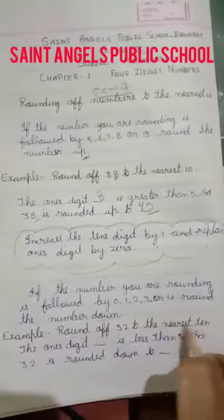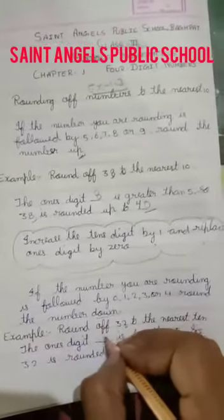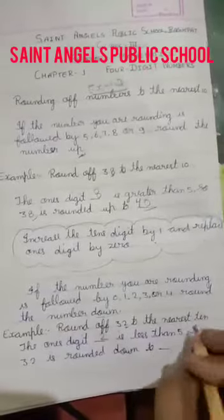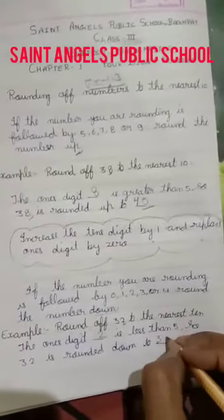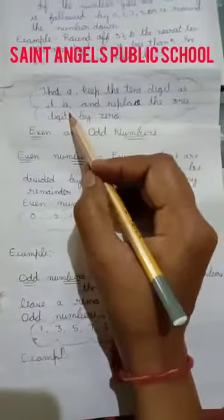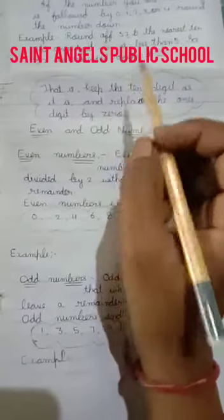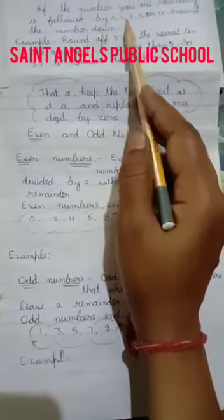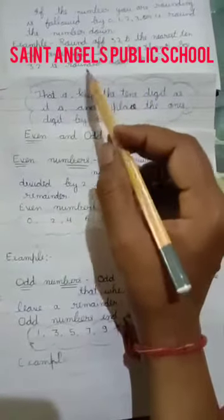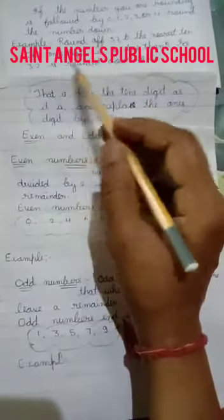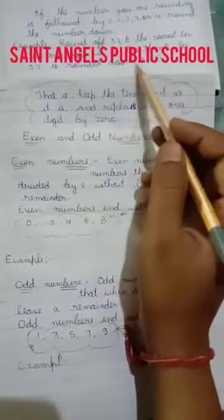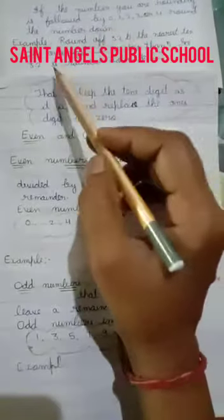Now look at the example. Round 32 to the nearest 10. The 1's digit is 2, which is less than 5 — yeh aapka 5 se less than hai. So it's rounded down to 30. That is, keep the 10's digit as it is and replace the 1's digit by 0. Jab aapka 5 se small hai, means 0, 1, 2, 3 and 4 — aapka 1's digit hai — tab aapka 10's digit same rahega. Here 3, so write 3, and replace the 1's digit by 0. So 32 is rounded down to 30.